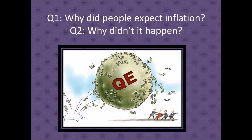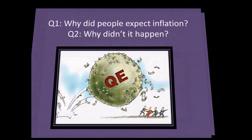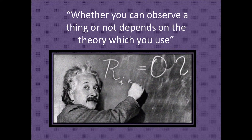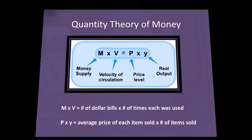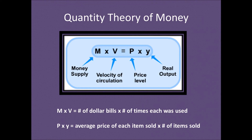Question one: why did people expect inflation? Question two: why didn't it happen? Here's that Einstein quote: 'Whether you can observe a thing or not depends on the theory which you use.' The particular way you interpret the world and which variables you believe are most important define what you notice. So what exact theory were these hyperinflation warnings coming from? It was the quantity theory of money — the MV equals PY I just showed you in the study question. So here's MV equals PY again; let me go into a little bit more detail.